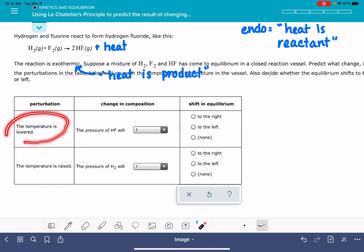So when we look at the first perturbation, the temperature is lowered. That means that the heat is decreasing. Whenever we decrease the amount of anything in a chemical reaction, the position of equilibrium shifts in that direction to try to put back whatever we've removed.